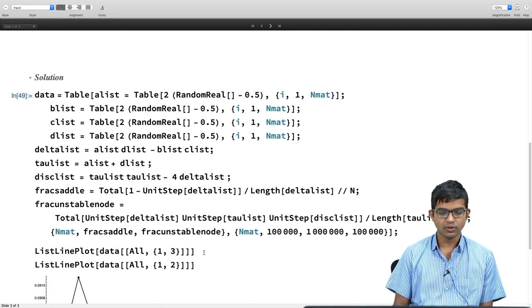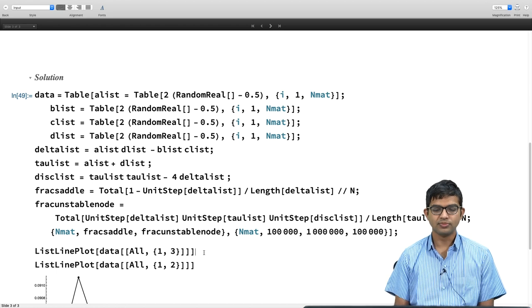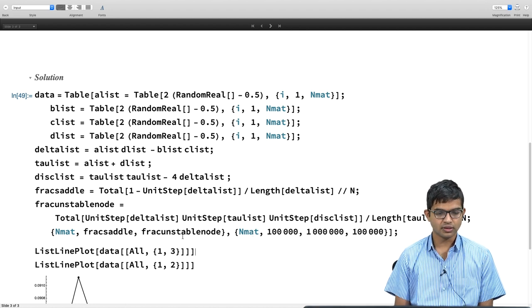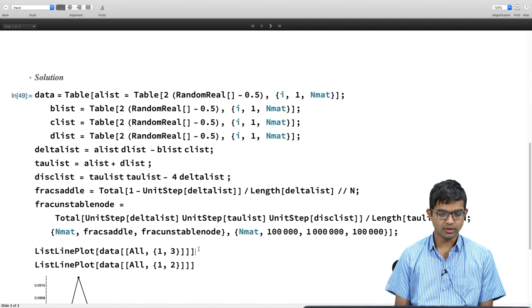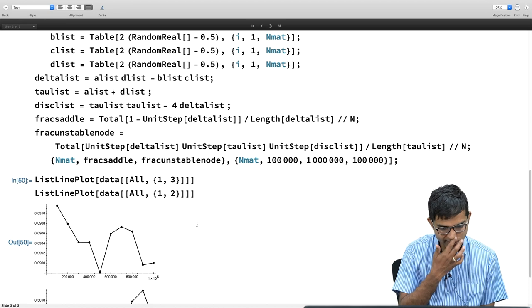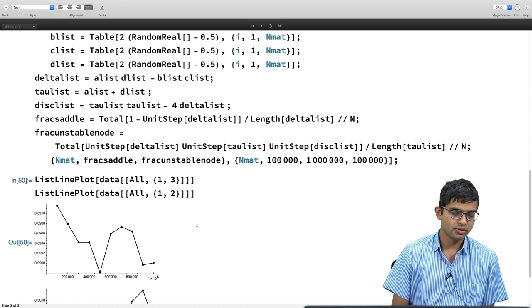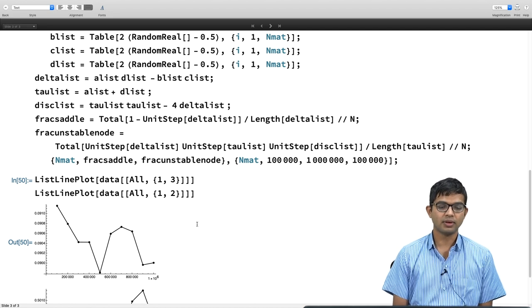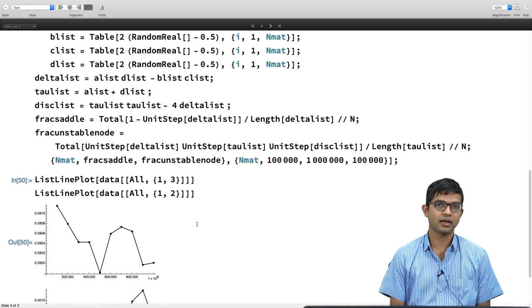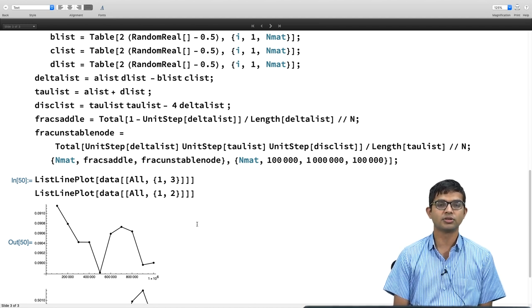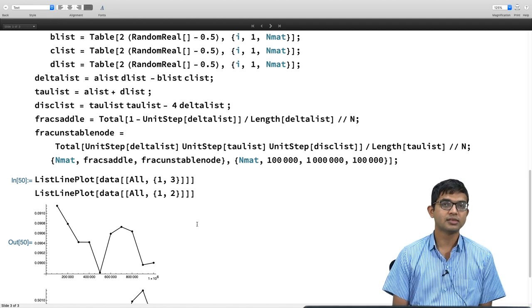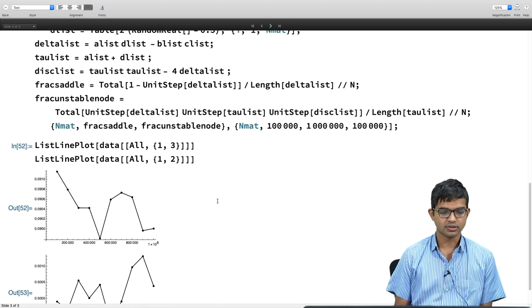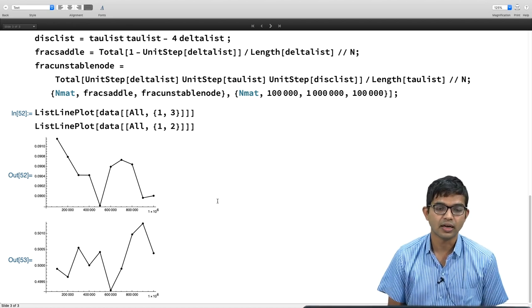When I say all and 1 comma 3, it gives me basically plot of data with respect to the first and the third. The third here is frac unstable node. Let us look at that one first. It is going to some value like 0.09. You can make this even more sophisticated, try to get error bars using the methods that we have described earlier for calculating error bars when you have any stochastic element and when you have lots of samples. There is a way to estimate the error and you can try to plot all of them. So let us look at what happens to the other case, fraction of saddle points.